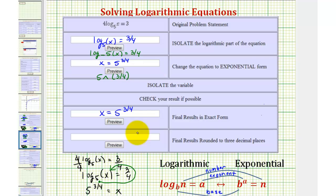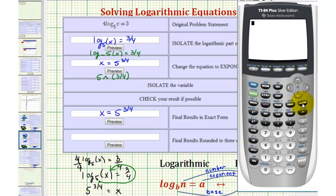And for the last step, we'll get our decimal approximation to three decimal places. So now, we'll go to the calculator, and enter five. Here's the carat for the exponent, and then in parentheses, three-fourths.